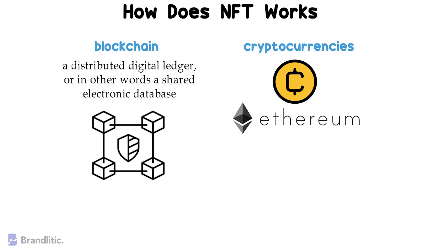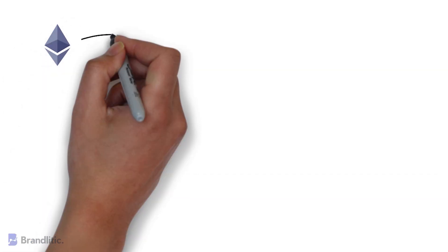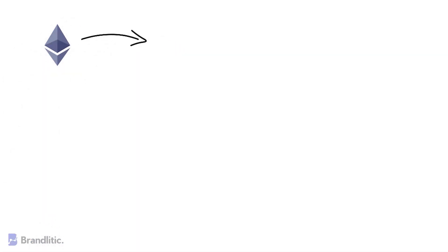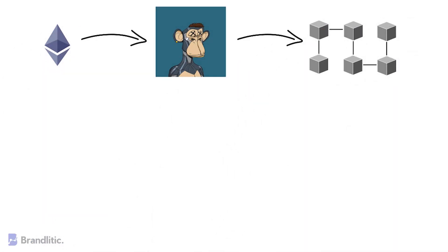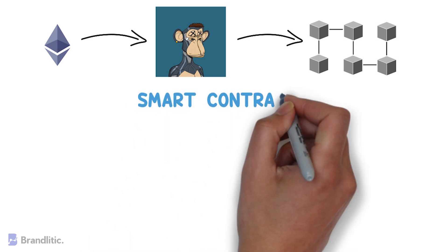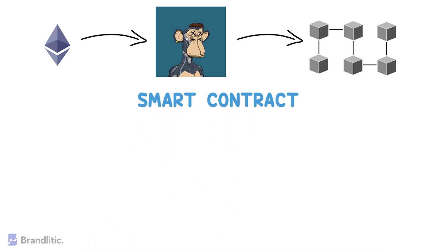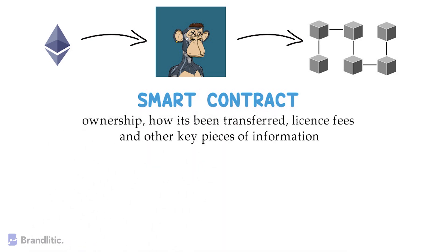Now let's try to understand the working of NFTs. By spending your Ether on an NFT, your purchase is added to the blockchain. And because no one else can change this, there is a clear piece of proof that you own the NFT in what we call a smart contract, which is another piece of data that shows ownership, how it is being transferred, license fees, and other key pieces of information.